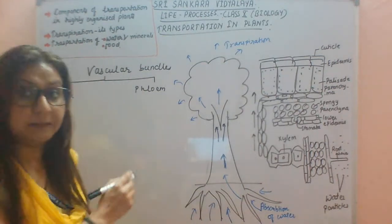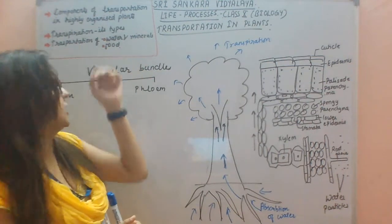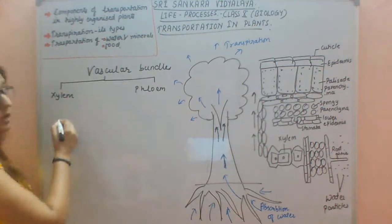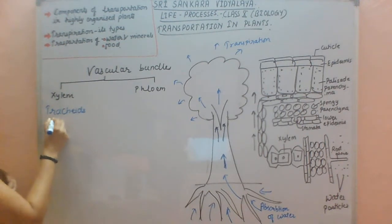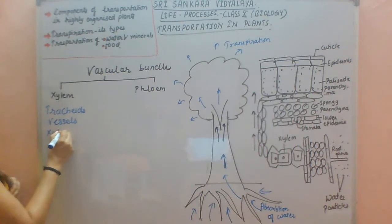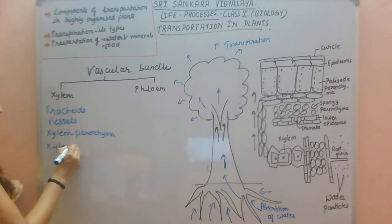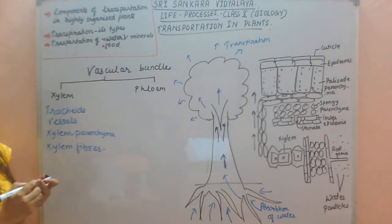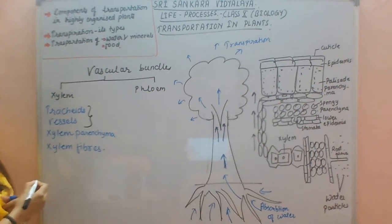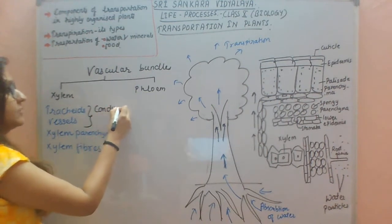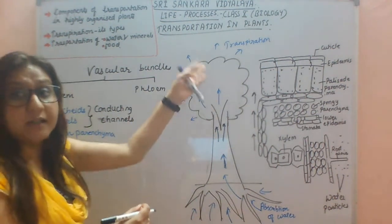Now we will study the components of xylem. You have already studied this in class 9; I am repeating it for a better understanding. The components of xylem are: tracheids, vessels, xylem parenchyma, and xylem fibres. Tracheids and vessels are the main conducting channels of xylem, meaning they are mainly responsible for the conduction of water and minerals.